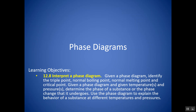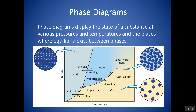Let's take a look at how to interpret phase diagrams. A phase diagram shows the state or the phase of a substance at different pressures and temperatures. You'll notice pressure is on the y-axis and temperature is on the x-axis, and there are different phases separated on the diagram.